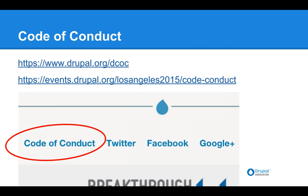There are also other open-source codes of conduct available online, like the one for the upcoming LA DrupalCon. The important things are to say your sprint has a code of conduct, have a primary point of contact person, and make clear that situations are handled confidentially. That confidentiality is really important for people to feel like they can share concerns.